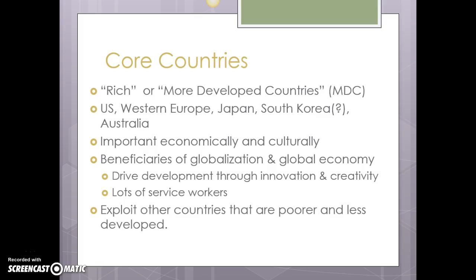Core countries run a lot of the global supply chain, and they exploit basically every less-developed country in some way. It could be through taking in workers or through so-called brain drain, where well-educated people from less-developed countries move to richer countries to take advantage of economic opportunities there. But it could also be resource-based exploitation, which we see particularly with periphery countries. Brain drain tends to be more of a semi-periphery concern.